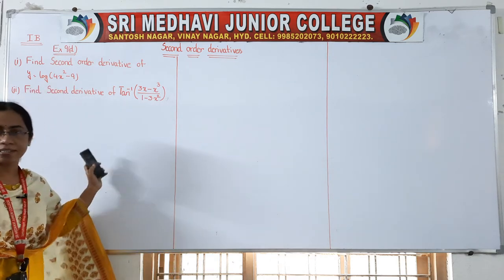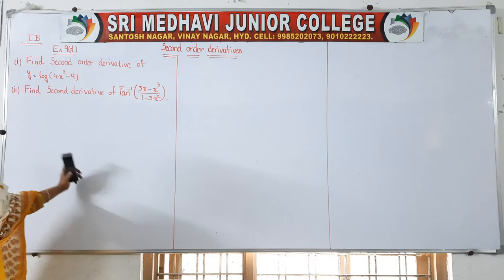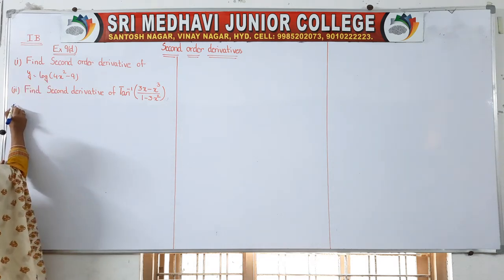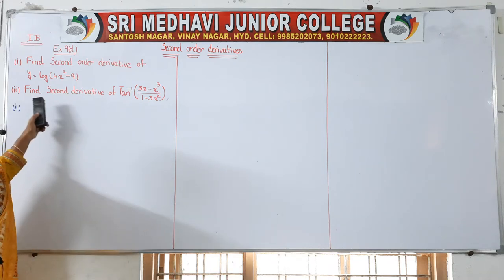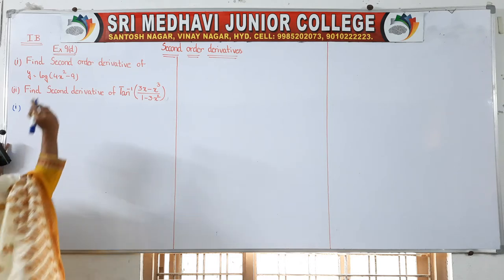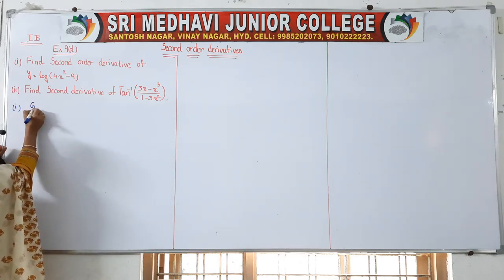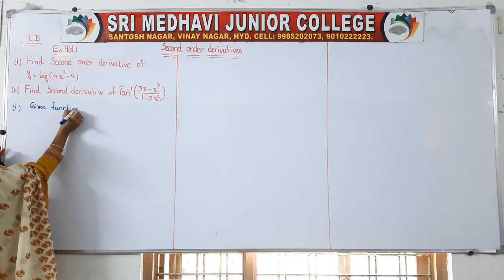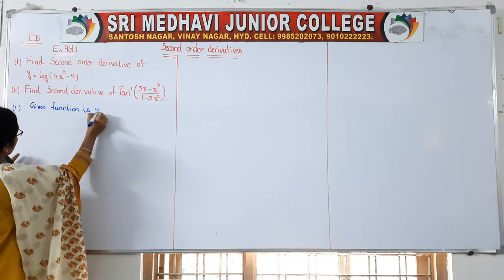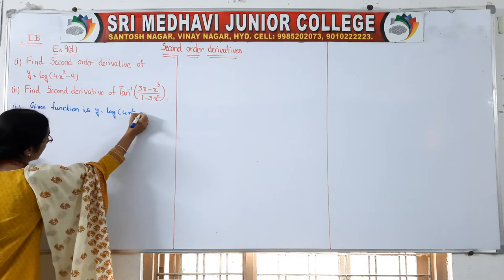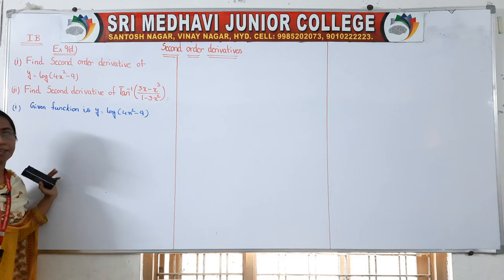Today we will finish these second derivative problems from Exercise 9D. Come to the first question: find the second order derivative of y = log(4x² - 9). The given function is y = log(4x² - 9).